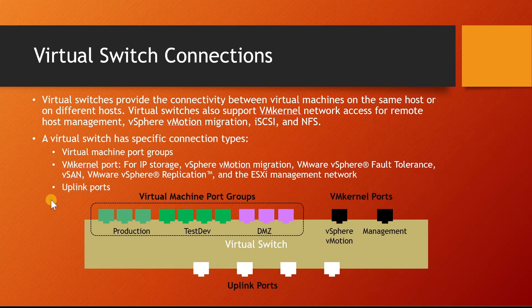A virtual network is exactly like its physical Ethernet counterpart — standard switches, standard devices, and cables all interconnected. In virtual networks, we do the same thing. To create virtual networks, VMware supports virtual switches. A virtual switch is a layer 2 device; it's a virtual device. It forwards frames to other switches or switch ports based on MAC addresses, and it supports features such as VLANs and port channels.